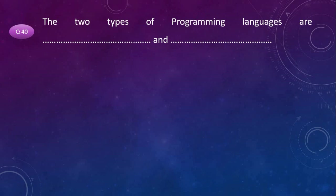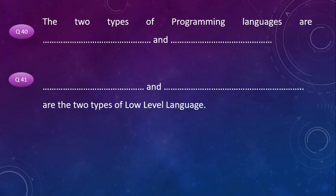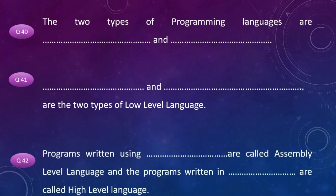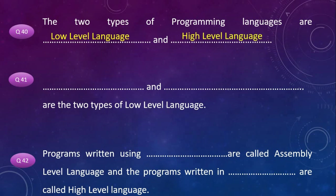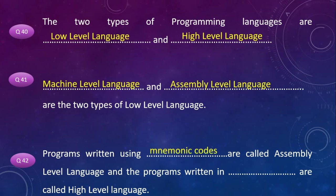The two types of programming languages are low-level language and high-level language. The two types of low-level language are machine level language and assembly level language. Programs written using assembly mnemonics are called assembly level language, and programs written in English-like coding are called high-level language.